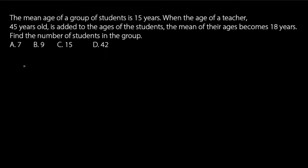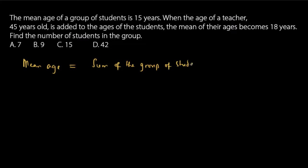Recall that the formula for finding the mean — let's write that down. The mean age is given by the sum of the ages of the group of students, divided by the total number of students. This is the formula for the mean: the sum of the data divided by the total number of observations.